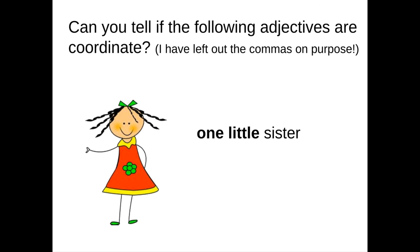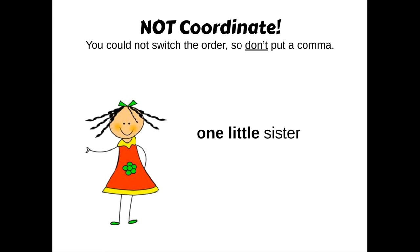What about this one? 'I have one little sister.' And yes, numbers are adjectives. Look at 'one little' and do the test in your head. Those are not coordinate. Do not put a comma there, because you would not switch the order — you would not say 'I have little one sister.' It doesn't make any sense. So if it does not pass the test, do not put a comma. They're not coordinate.